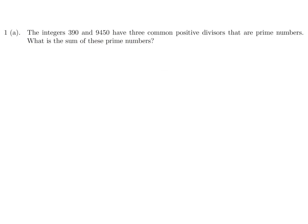The integers 390 and 9450 have three common positive divisors that are prime numbers. What is the sum of these prime numbers? Okay, let's break up 390. I believe it's 2 times 3 times 5 times 13. So then 9450, same story. Break it up into its prime factors, and I believe that is 2 times 2 times 3 times 3 times 5 times 53. So they have three common positive divisors. So the common ones are 2, 3, and 5, as you can see. And they want you to add them up. They want the sum of those, so that's obviously just 10.